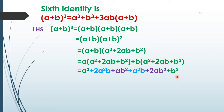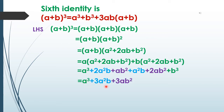We add the like terms: 2a²b + a²b = 3a²b, and 2ab² + ab² = 3ab². So the result is a³ + 3a²b + 3ab² + b³.